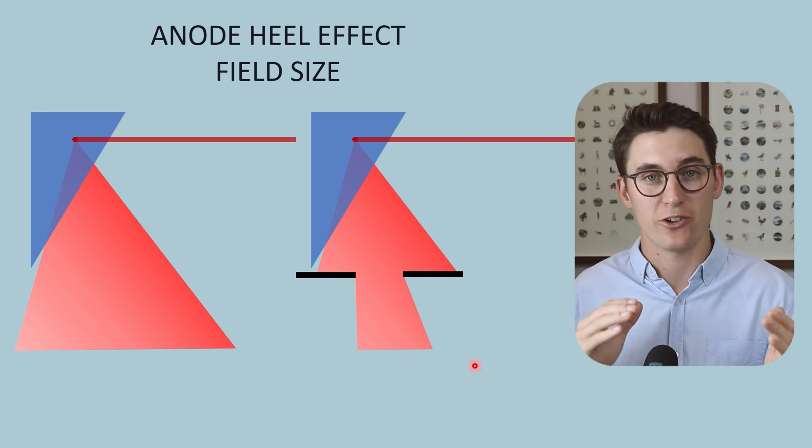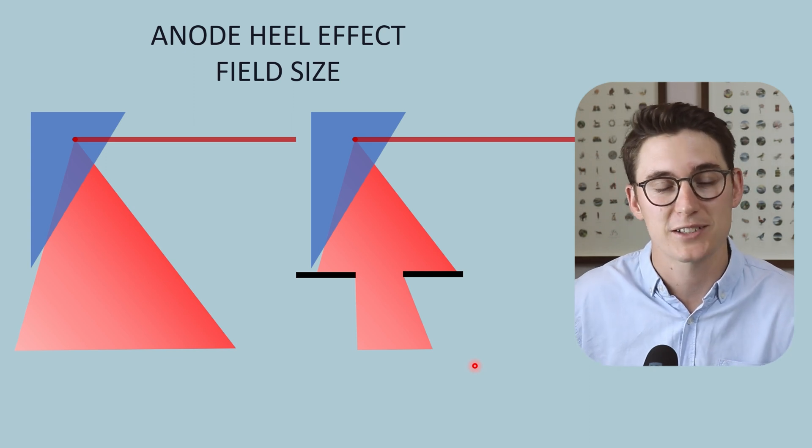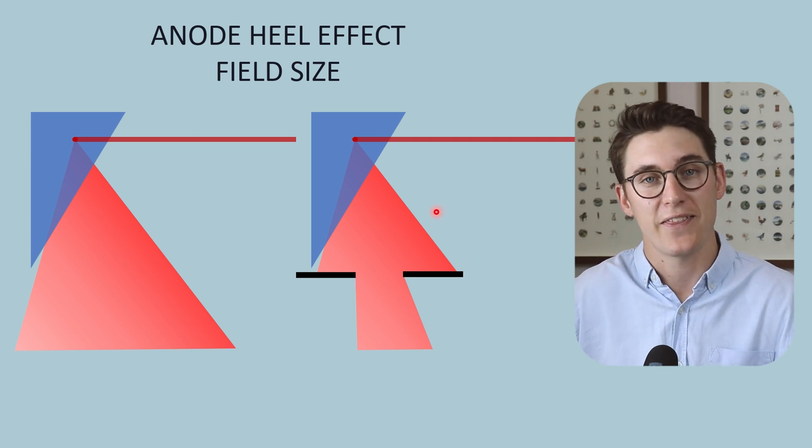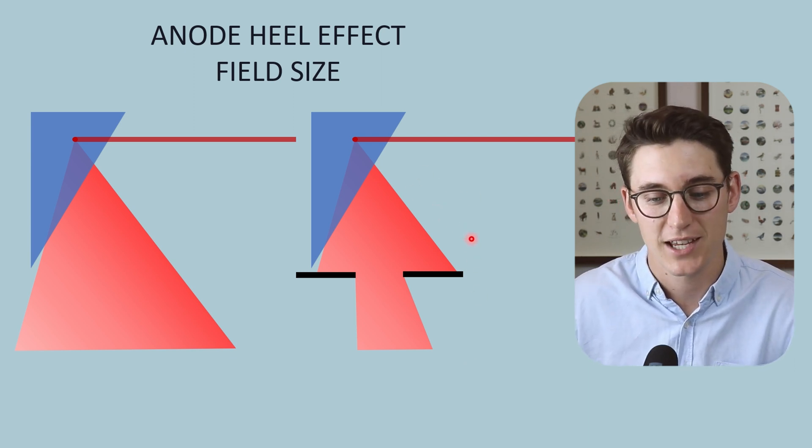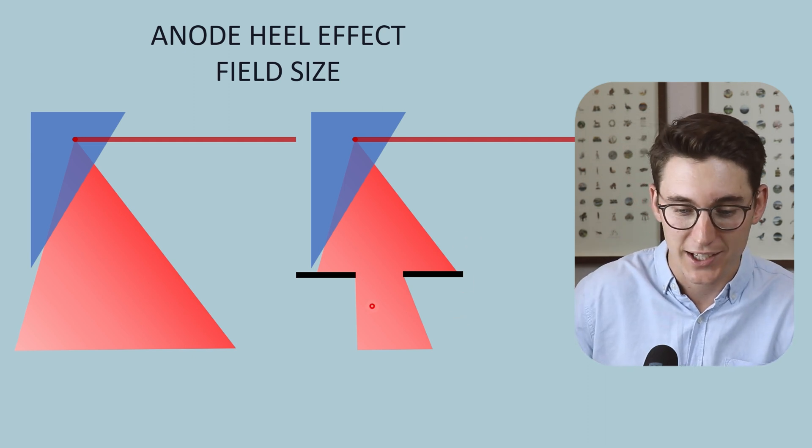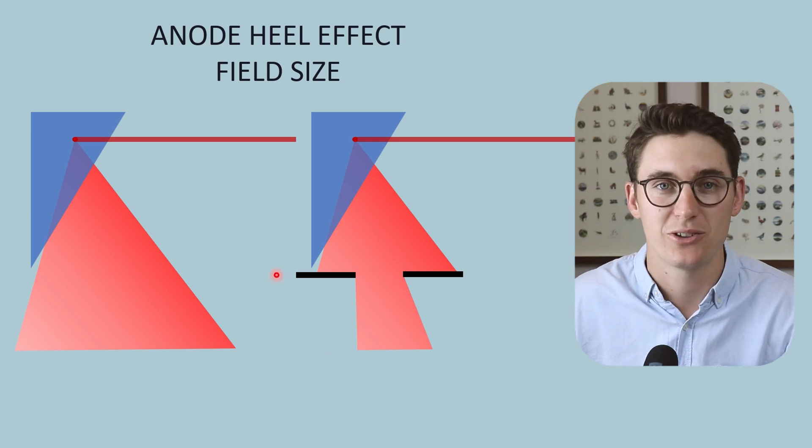So firstly, we can change our anode angle. Increasing our anode angle reduces our anode heel effect. We can move our detector further away from the source and that will reduce the anode heel effect. And we can collimate or reduce the field size that we expose our patient to and that also will reduce the anode heel effect.